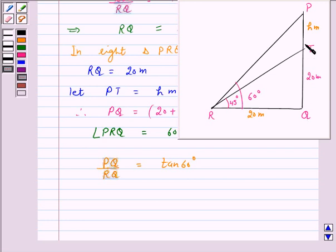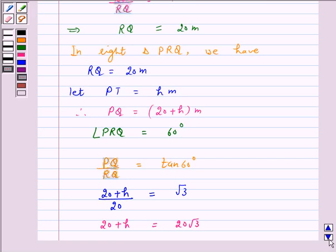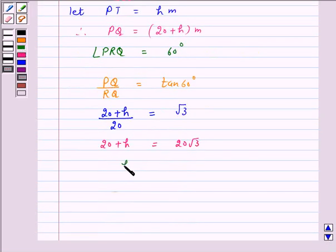Now PQ is 20 plus h meters upon RQ is 20 meters is equal to root 3 as tan 60 degrees. Now on cross multiplication we have 20 plus h is equal to 20 root 3. h is equal to 20 root 3 minus 20 and this is equal to 20 times root 3 minus 1 meters.